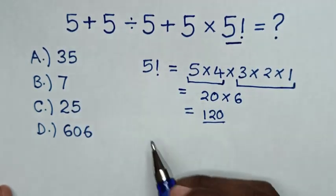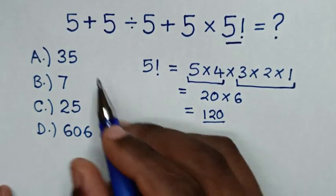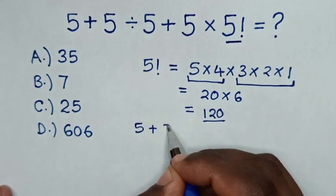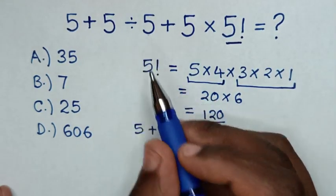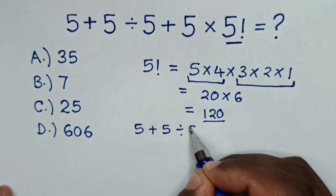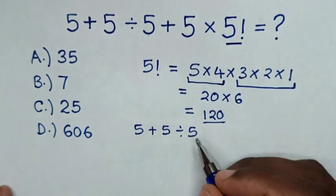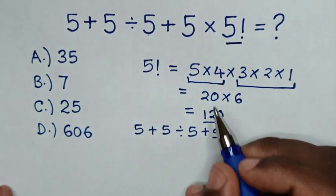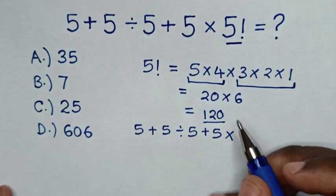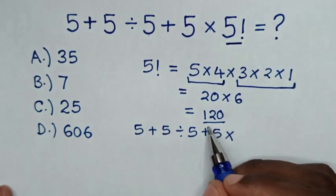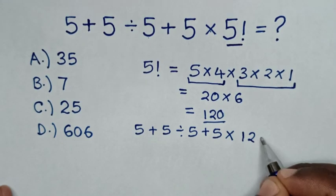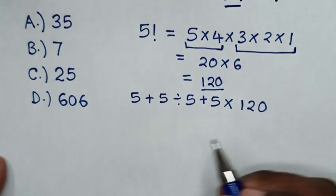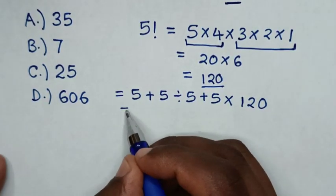Then our problem will be 5 plus 5 divided by 5 plus 5 then times 5 factorial. So we'll substitute this 120. Then it will be equal to,